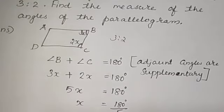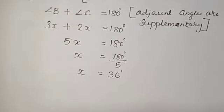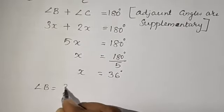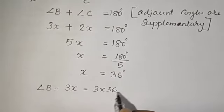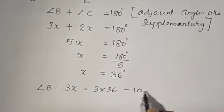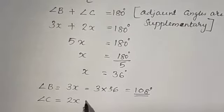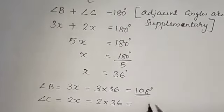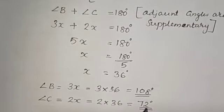The value of X is 36. Now we have to find the angles. Angle B is equal to 3X, that means 3 into 36, which gives 108 degrees. And angle C is equal to 2X, which is 2 into 36, equal to 72 degrees. So angle B is 108 degrees and angle C is 72 degrees.